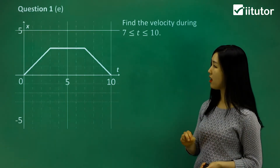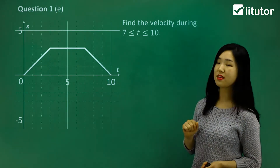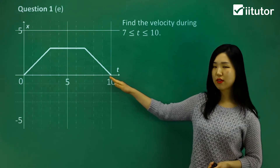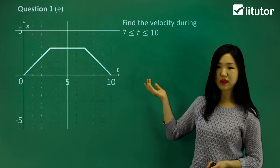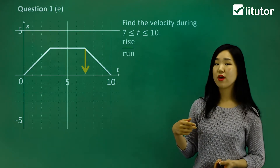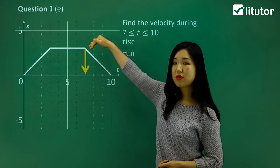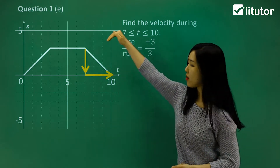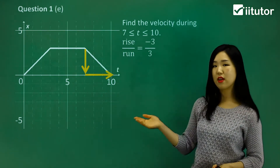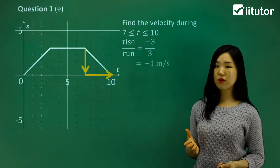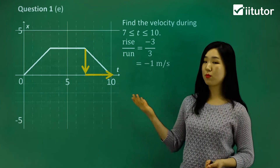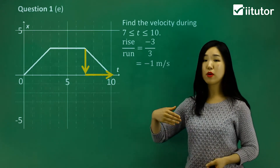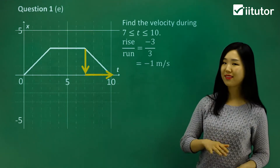Let's find the velocity when t is between 7 and 10. This time it's going this way — going down. So we want to find the gradient again to find the rate, which is ultimately the velocity. Rise over run: we're going down by 3, so it's negative 3, and going to the right by 3, so positive 3. Negative 3 over 3 is negative 1 — so negative 1 meters per second is the velocity here. The negative velocity implies it's going backwards. Positive velocity means going forward; negative velocity means going backwards.